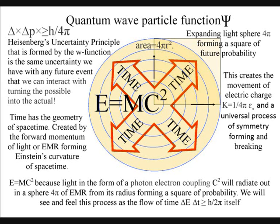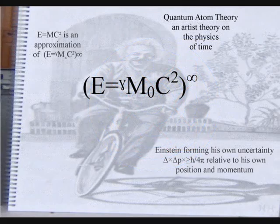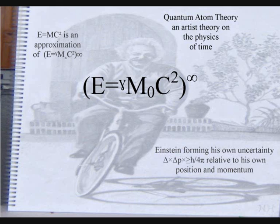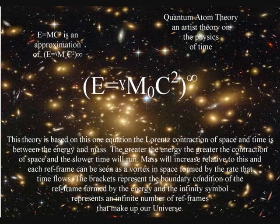From its radius, forming a square of probability — this is the same probability we have with any future event, because the process forms the flow of time itself photon by photon. The brackets represent the boundary condition of the reference frame formed by the energy, and the infinity symbol represents an infinite number of reference frames that make up our universe.